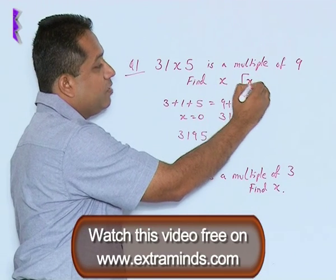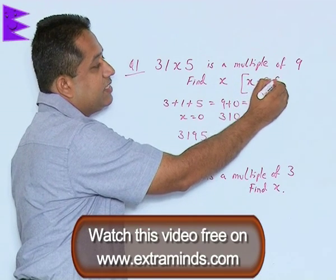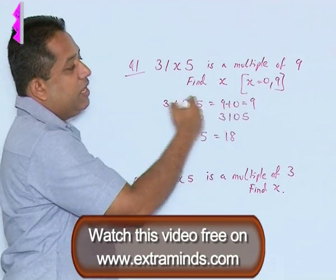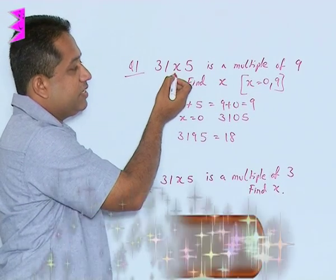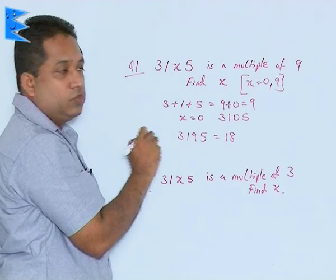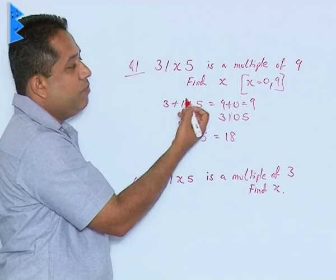So we have two values of x at the moment, x is 0 and x is 9. We cannot take more values of x because this particular value of x is a single digit number. So you do not have to take values beyond 9.